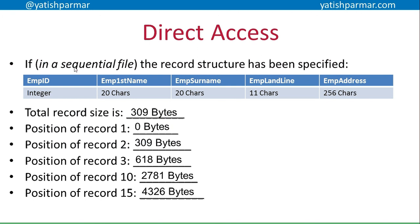The position of the first record is at zero bytes, at the beginning of the file. The position of record two is at 309 bytes — because the first record is 309 bytes long. The third record is at 618, the tenth at 2781, record 15 at 4326, and so on.